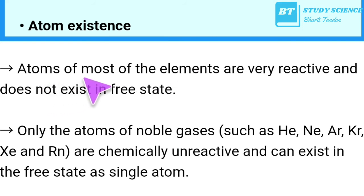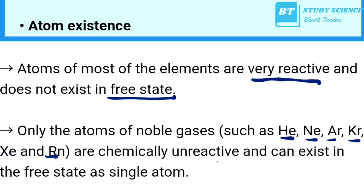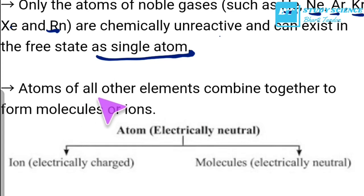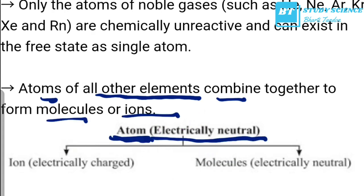Atom existence: atoms of most elements are very reactive and do not exist in the free state. Only noble gas atoms — helium, neon, argon, krypton, xenon, and radon — are chemically unreactive and can exist as single atoms in the free state. All other elements' atoms combine to form molecules or ions. An atom is an electrically neutral species; ions are electrically charged, while molecules are electrically neutral.